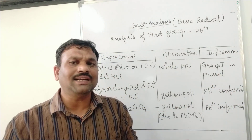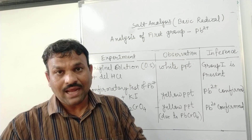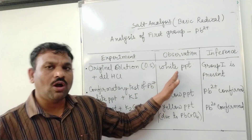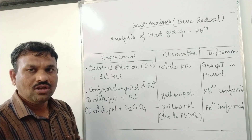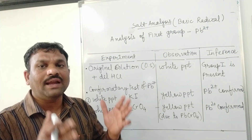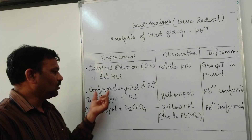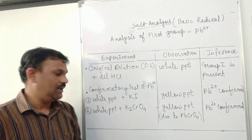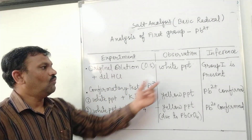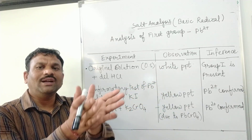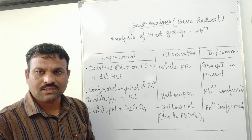The formation of a white precipitate indicates the presence of group 1. If this white precipitate is not formed, we move to the second group. But since the white precipitate is formed, we have to check for the presence of lead. The white precipitate is to be divided into two parts because we need to perform two different confirmative tests.